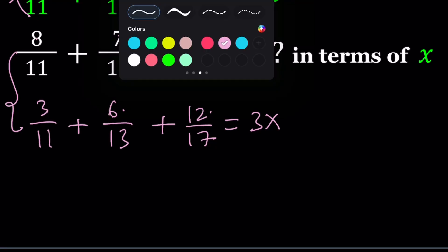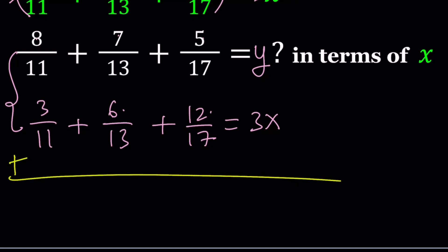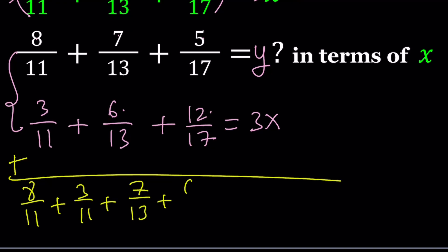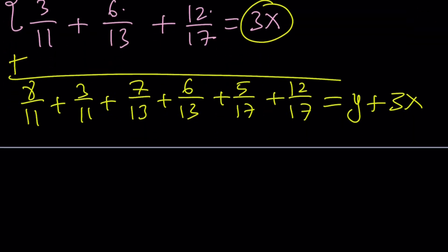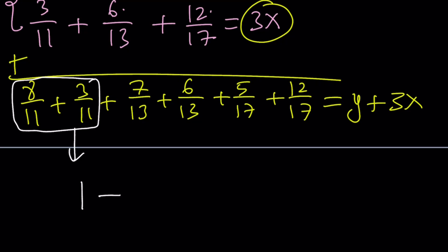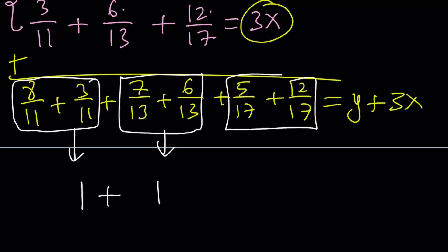Let's add these two equations. We get 8/11 + 3/11 + 7/13 + 6/13 + 5/17 + 12/17 = y + 3x. Here's the cool part — this is why we're doing this: 8/11 + 3/11 = 11/11 = 1. Similarly, 7/13 + 6/13 = 1, and 5/17 + 12/17 = 1. So we get 1 + 1 + 1 = 3, and that equals y + 3x.